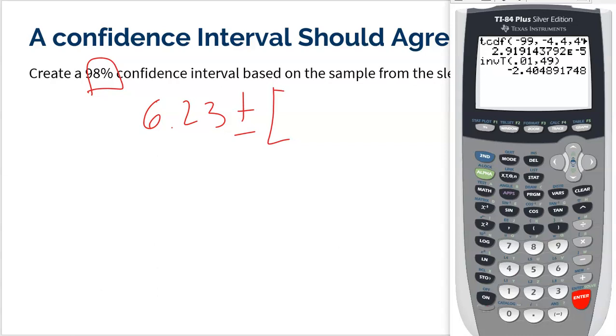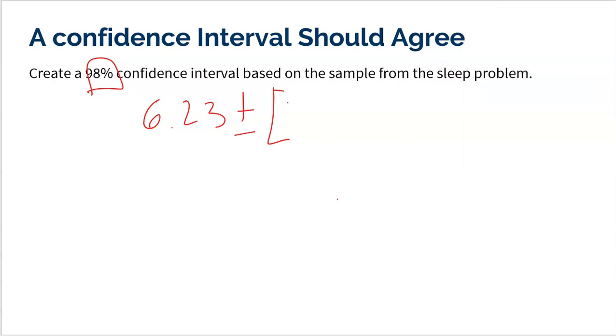So that is 2.4049, 2.4049 times the standard error. Now, remember, the standard error is going to be taking the standard deviation of our sample, 1.24, divided by the square root of our sample size of 50.